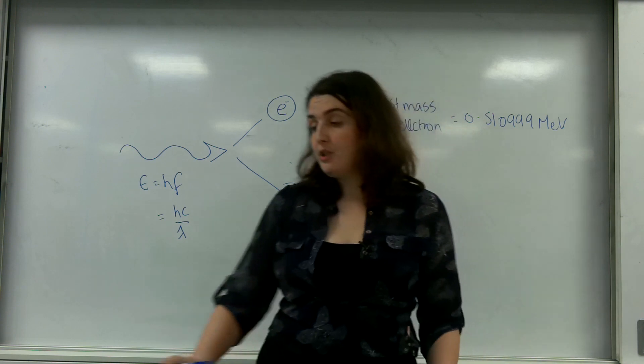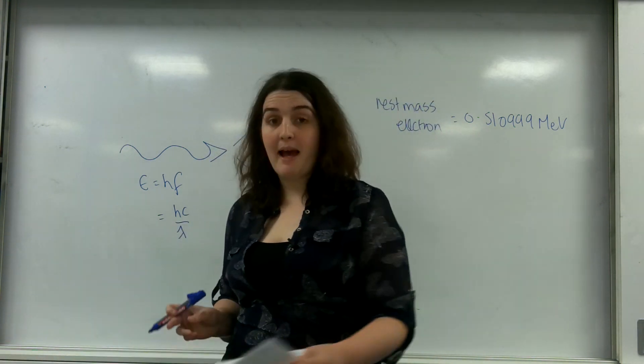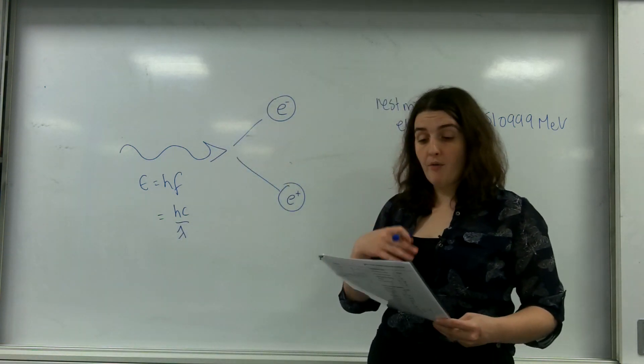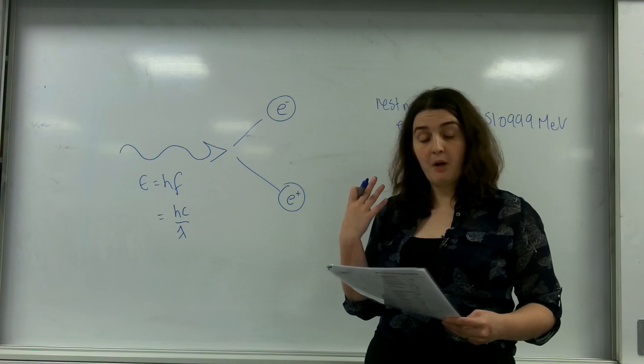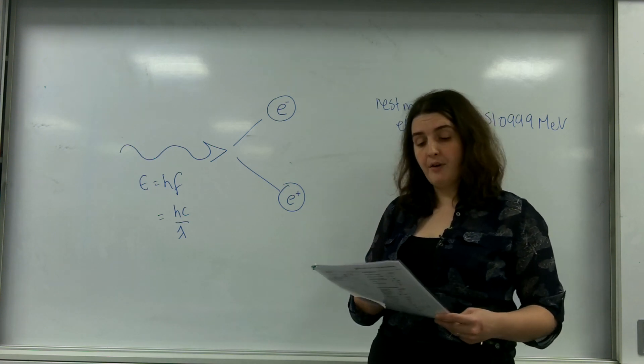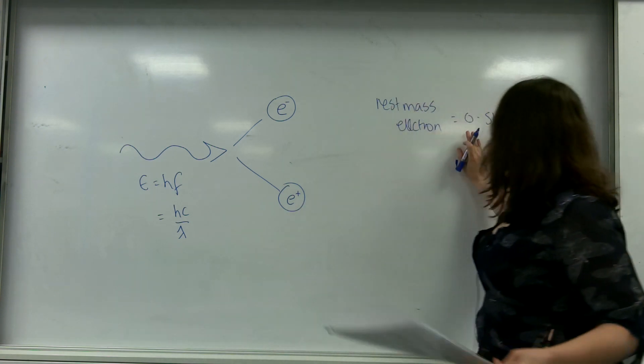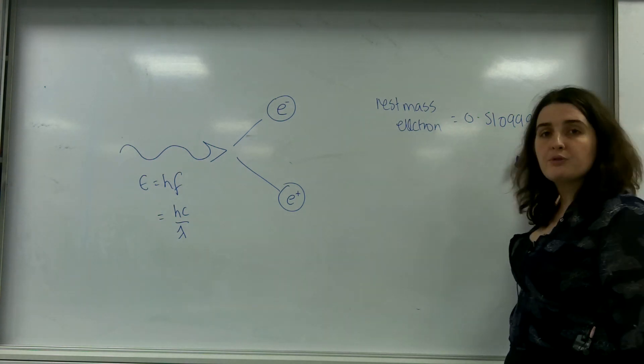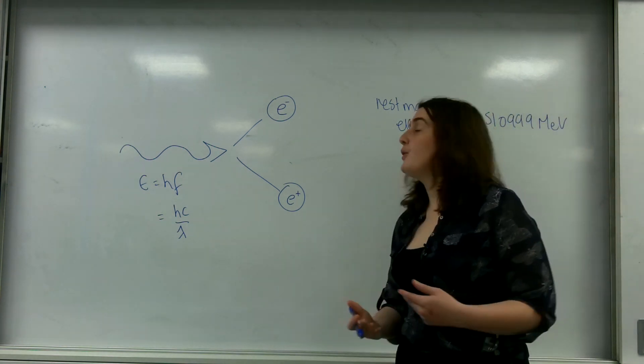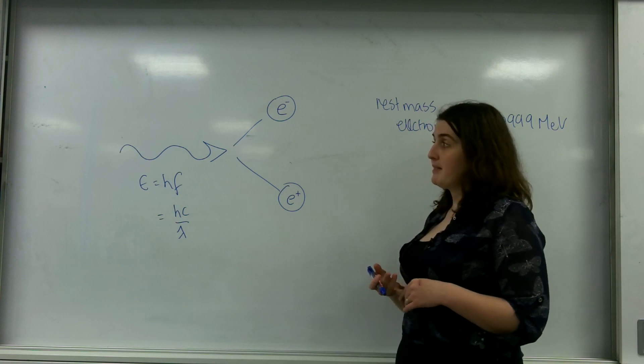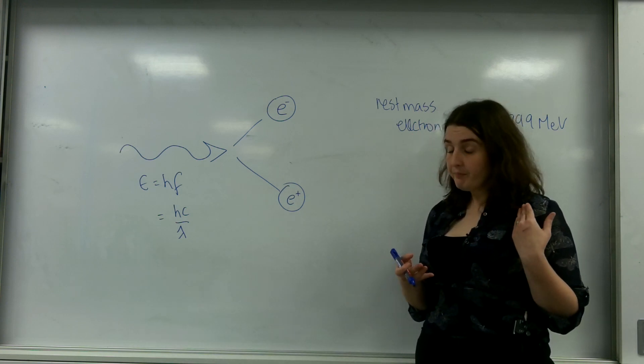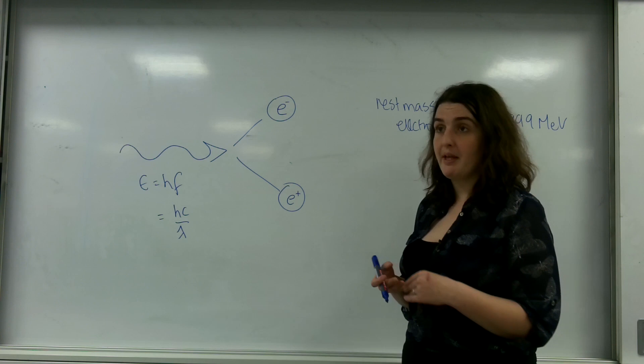Now using the datasheet you can find the rest mass energy of the particles. So in here I could find for an electron was 0.51099 megaelectron volts. And this is also the energy, the rest mass energy for a positron as well, because remember they are the same mass.